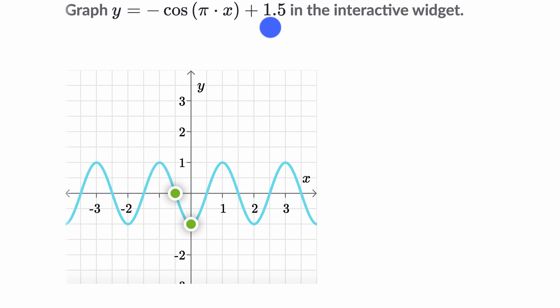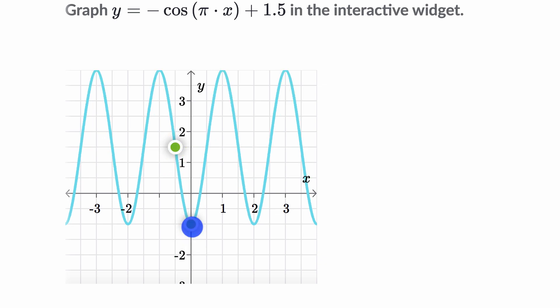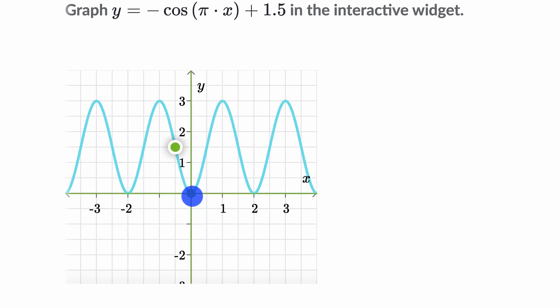And then last but not least, we have this plus 1.5. So that's just going to shift everything up by 1.5. So I'm just going to shift everything up by 1.5, and shift it up by 1.5. And there you have it. That is the graph of negative cosine of pi x plus 1.5.